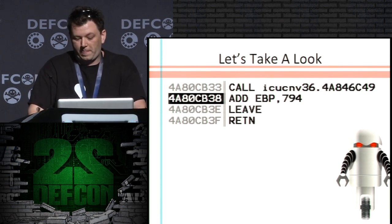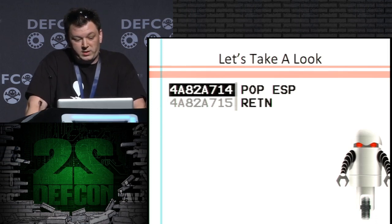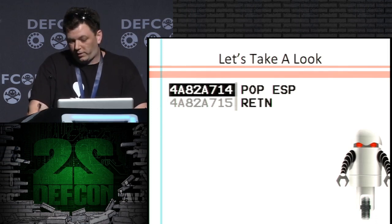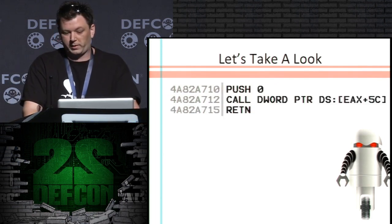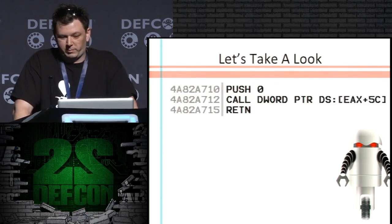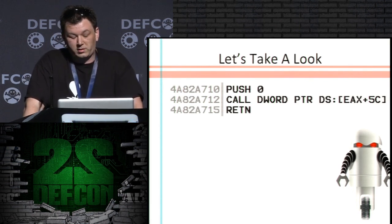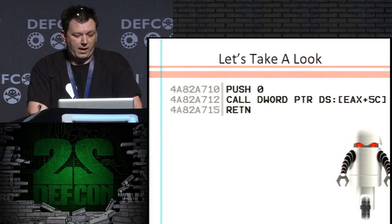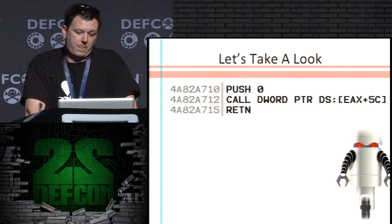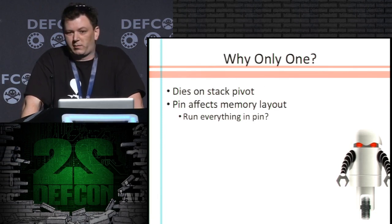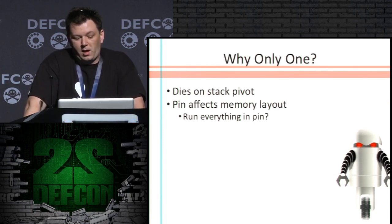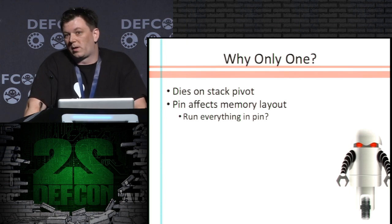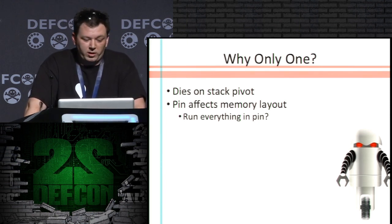We execute those three instructions and get to a stack pivot — and this is the one we detect. Let's see why. There isn't really an instruction before it, because it's not really an instruction that's supposed to be there — we're just returning into the middle of an instruction, and we can detect that. At this point, this is where it dies, at this return right here, because PIN is affecting my memory layout and messing up the heap spray.